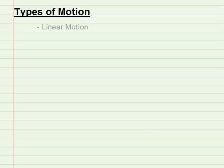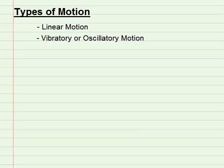There are basically three types of motion. These include linear motion, vibratory or oscillatory motion, and circular motion.